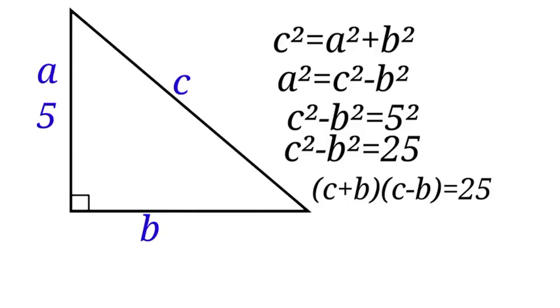Let us write out all the factors of 25. We have to choose one of these factors and use it to solve our problem. For any two numbers c and b, c + b will be greater than c - b. Let us check the factors.